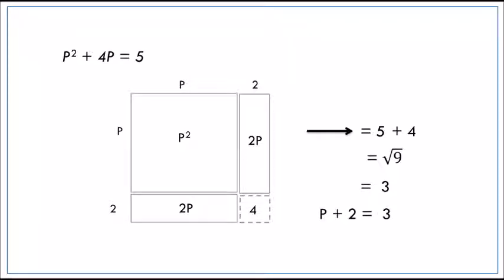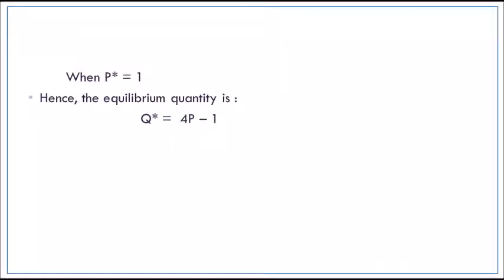So we know that the equilibrium price will be 1. Hence, we can get the equilibrium quantity which is 3. So we know that from Al-Khawarizmi method to find quadratic equation, we can find it and apply it to the economic application to find the price equilibrium and quantity equilibrium.